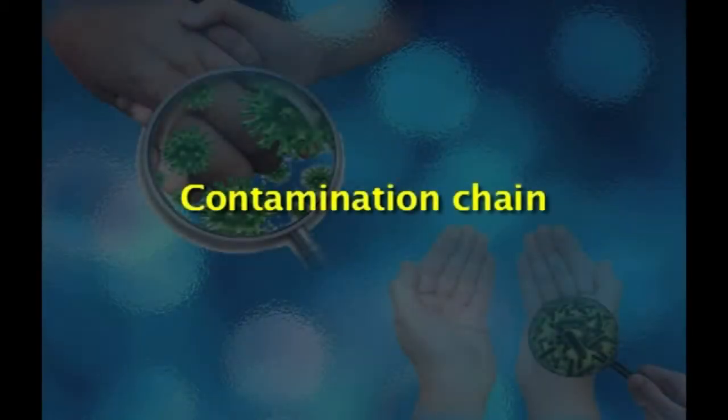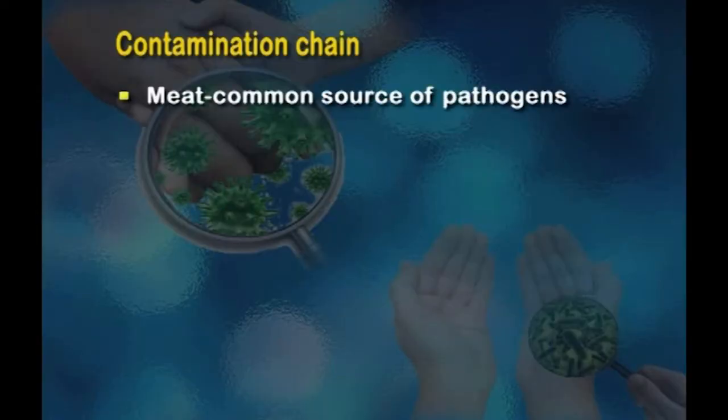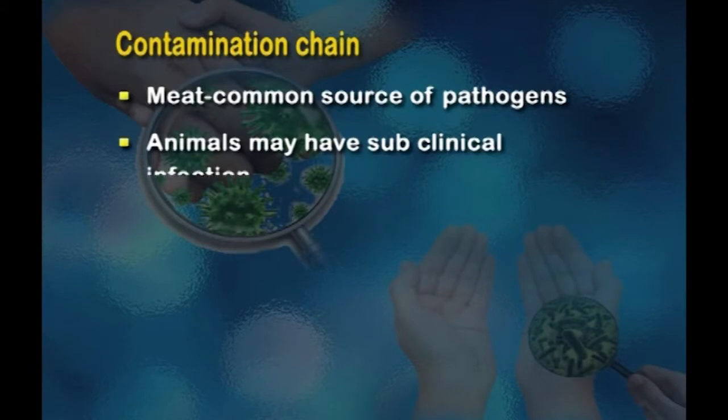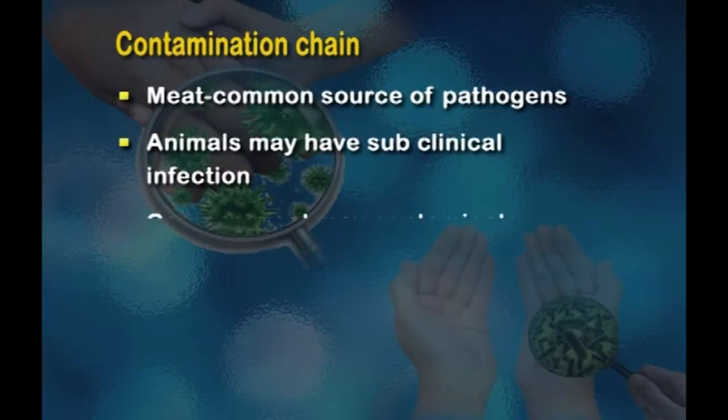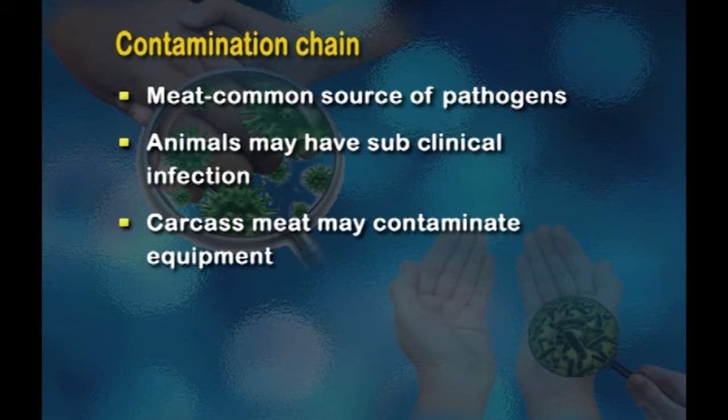Now let us look at the contamination chain. Meat is a very common source of pathogens — organisms which can multiply in the human body causing disease. Animals may have a subclinical infection and pass organisms directly to humans through their tissues used as meat, or indirectly to other animals through excreta or body surfaces. Carcass meat that is jointed may contaminate equipment — for example, in a slaughterhouse, using the same knife on an infected and a clean animal passes on the infection. When meat is cooked, it must reach very high temperatures so microorganisms are completely destroyed.